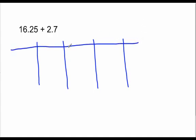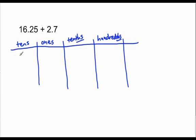These units are tens, ones, tenths (with a THS), and hundredths (with a THS). I'm going to use disks or circles to represent each one of these units — place value disks. I have one ten, six ones, two tenths, and five hundredths.